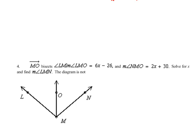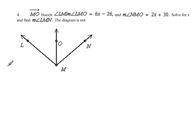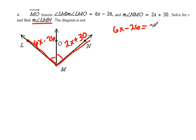Question number four. It tells us that MO bisects angle LMN, so that means right now this angle is congruent to this angle. LMO is 6x minus 26, and angle NMO equals 2x plus 30. Solve for x and find the measure of LMN. Notice that in the end they want us to know the measure of the whole thing. So since I have an angle bisector, it divides the angle into two equal parts, congruent parts. Congruent parts equal measures, so 6x minus 26 would equal 2x plus 30.